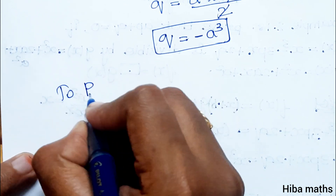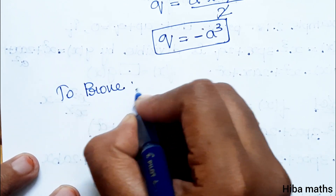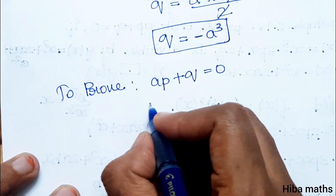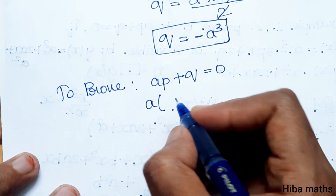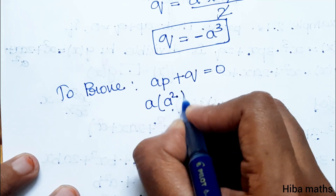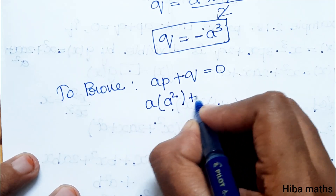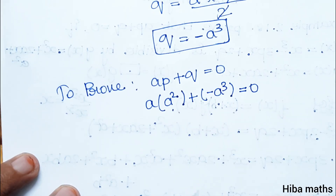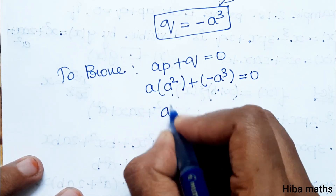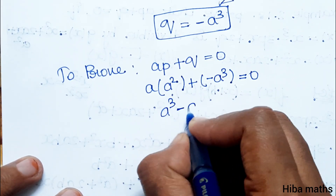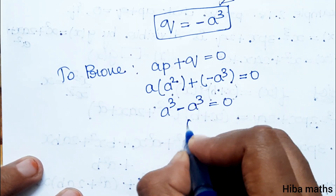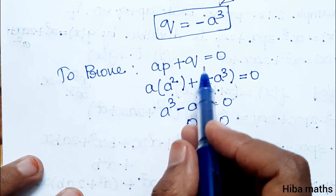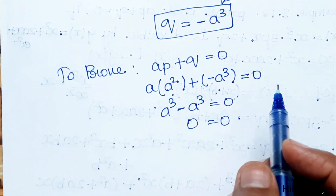To prove Ap plus q equals 0: substituting p equals a square and q equals minus a cube, we get a into a square plus minus a cube, which equals a cube minus a cube, which equals 0. Hence proved.